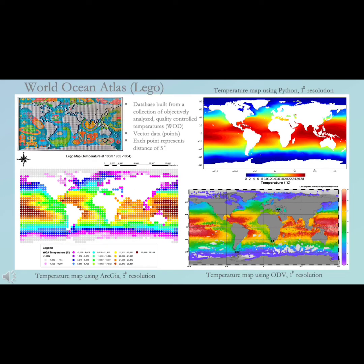The World Ocean Atlas, or as we affectionately call it, our Lego map. Data was acquired from profile data from the World Ocean Database, built from a collection of objectively analyzed and quality-controlled temperatures. Spatial data is shown as vector point data, where a point represents the position of a feature. There is five degree resolution, where each dot represents a distance spanning five degrees.